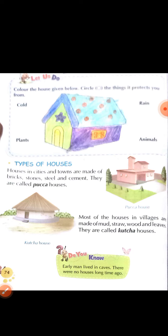Types of houses. Houses ke type dekhte hai. First, houses in cities and towns are made of bricks, stones, steel and cement. City mein jo house hota hai, aur towns mein bhi, bricks, stones, pathar, steel, ito, cement — woh sabhi se humara ghar banta hai. They are called a pakka house. Jisko hum pakka house kehte hai.